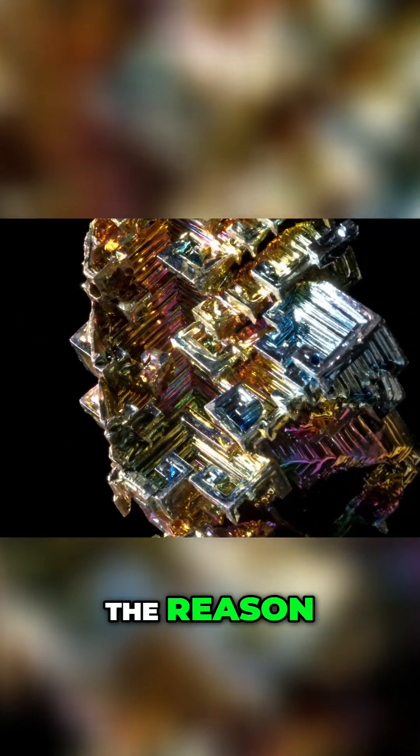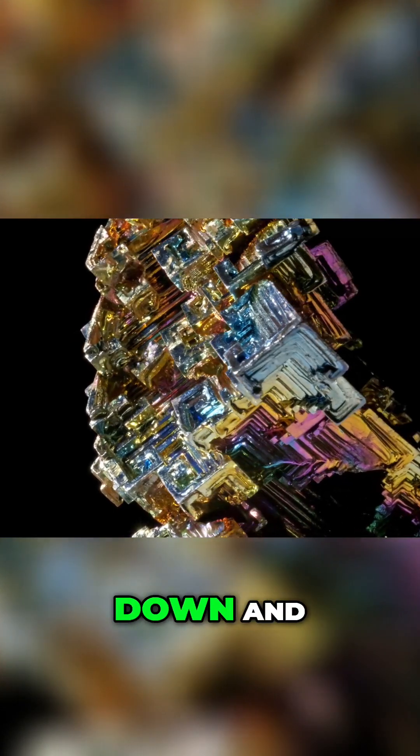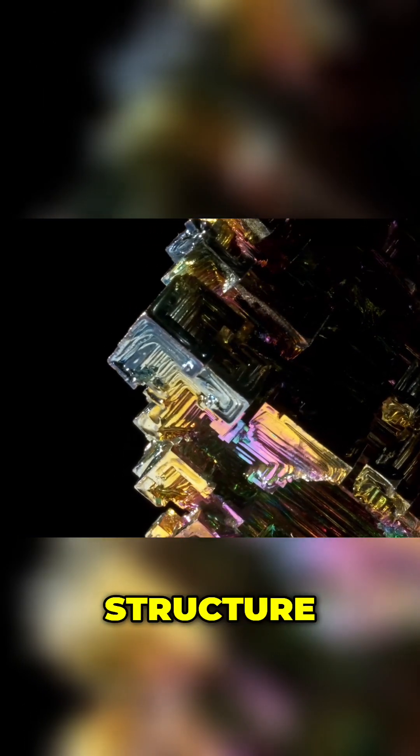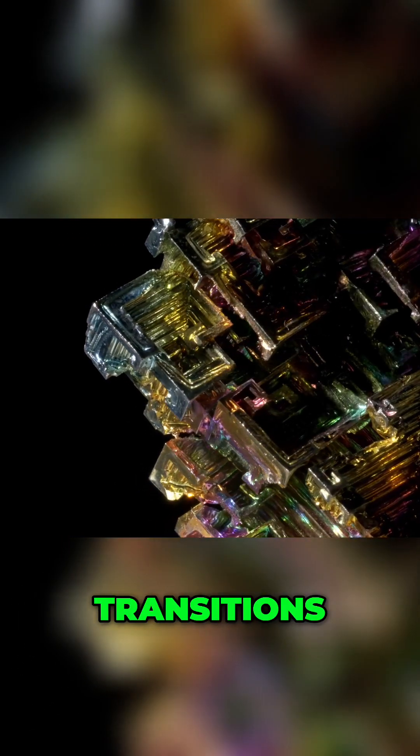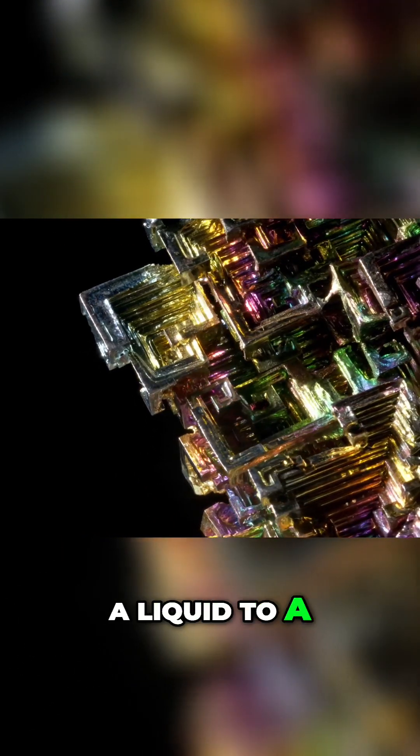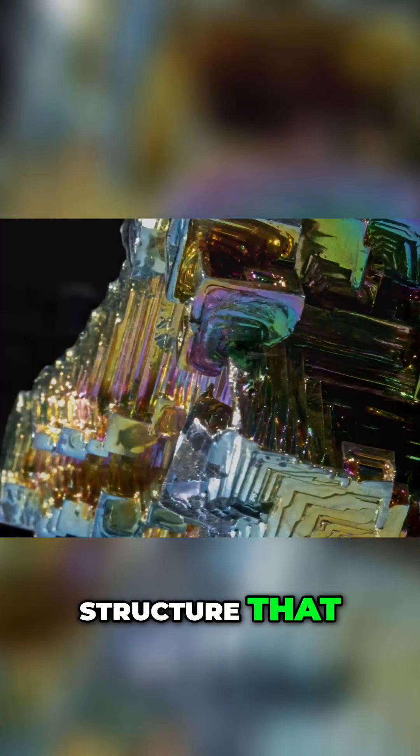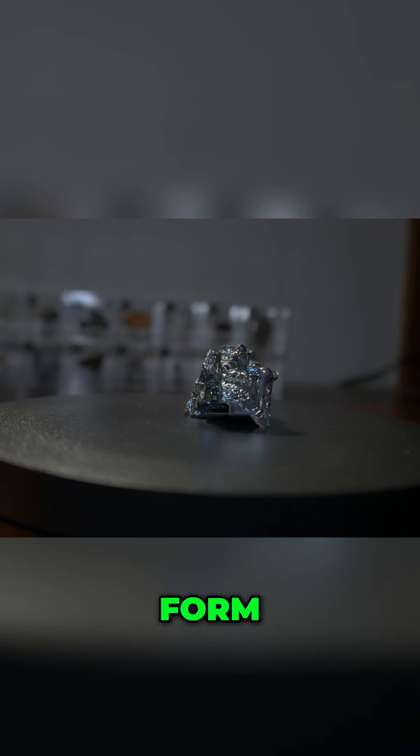So why is that? Well, the reason that bismuth expands when it cools down and solidifies, unlike other metals, is due to its crystalline structure. When bismuth transitions from a liquid to a solid, it forms a highly ordered crystalline structure that takes up more space than its liquid form.